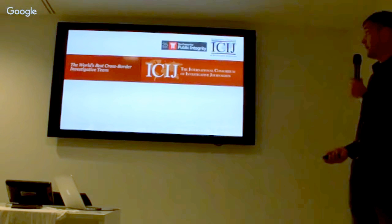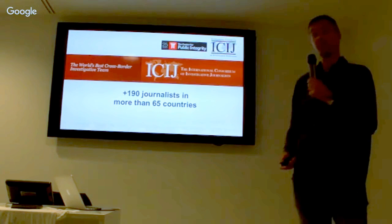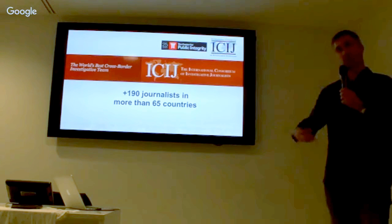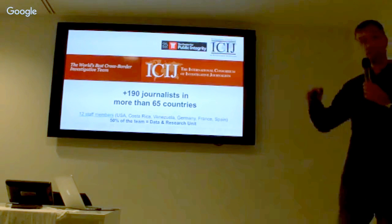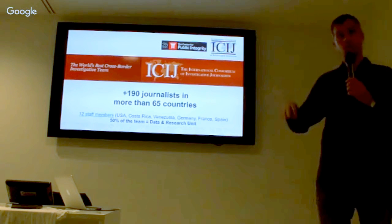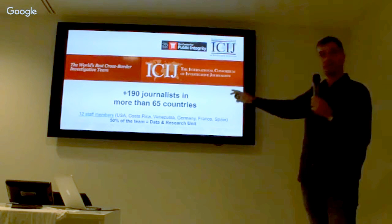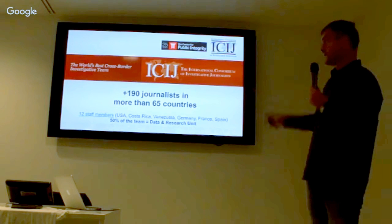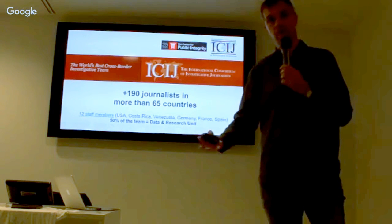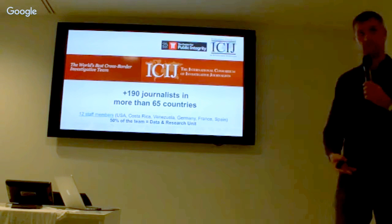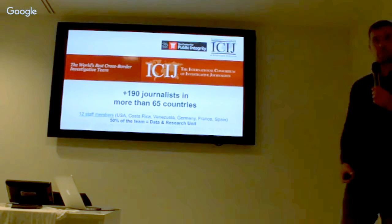The ICIJ — who are they? In essence, 190 journalists in more than 65 countries. It's more a network — they work mostly for newspapers. Within the ICIJ, they have 12 dedicated staff members — those are the people really working for the ICIJ. And 50% of them, namely six people, were at the time of the investigation the data and research unit — the IT people. The other six are not IT people. So you have 2.6 terabytes of data and six people to make something meaningful out of it.